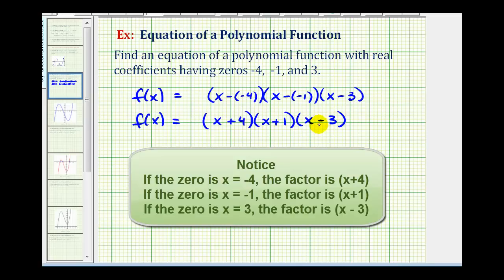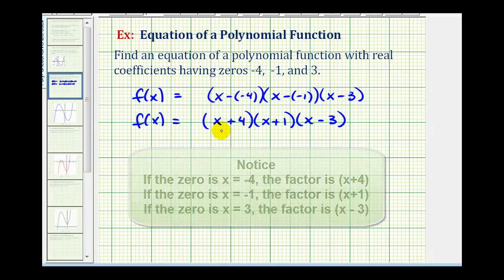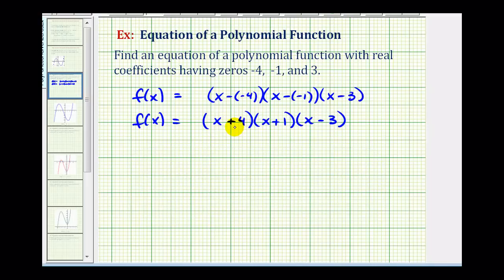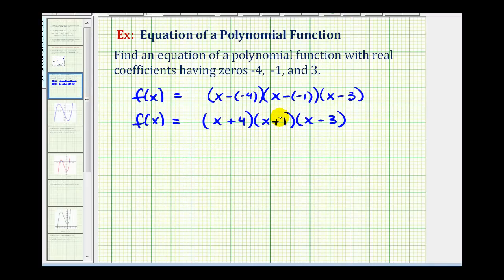Now to multiply this out, there's no shortcut. We can only multiply two binomials at a time. So we'll multiply the quantity x plus 4 times the quantity x plus 1, so we'll have four products. One, two, three, and four. So we'll have f of x equals x times x, that's x squared. X times 1, that's 1x. And then we have 4 times x, that's 4x. 1x plus 4x is 5x. And then 4 times 1 is positive 4.